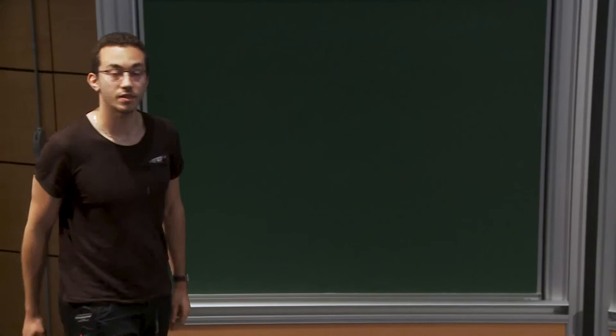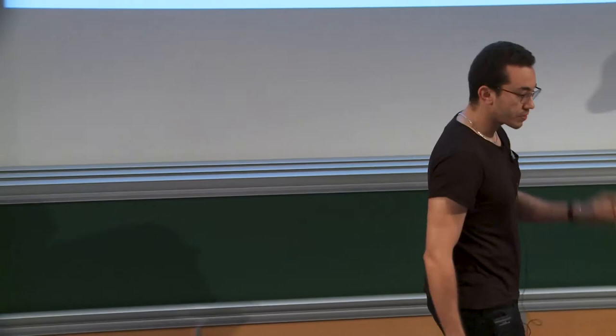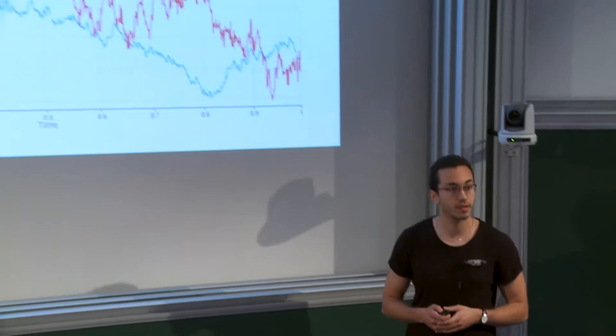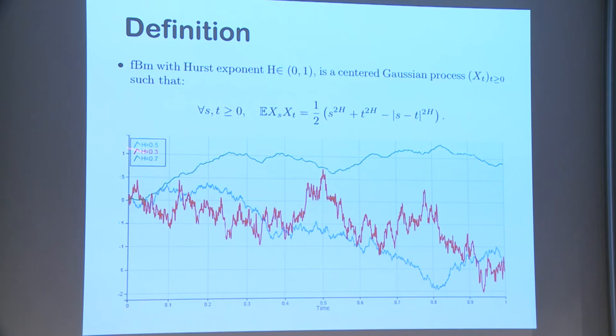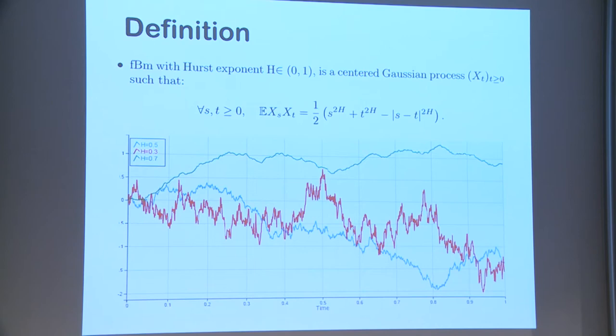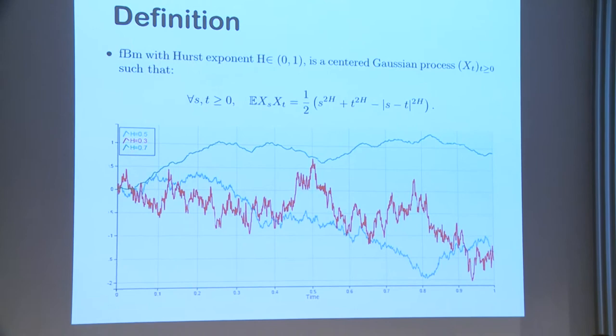What is fractional Brownian motion? Think of it as a generalization of Brownian motion with a new degree of freedom h, the Hurst index. When h equals one half, this is just Brownian motion. When h is bigger than one half, increments become positively correlated and you get something smoother. When h is smaller than one half, increments are negatively correlated and you get something very rough. These are three examples of fractional Brownian motion.